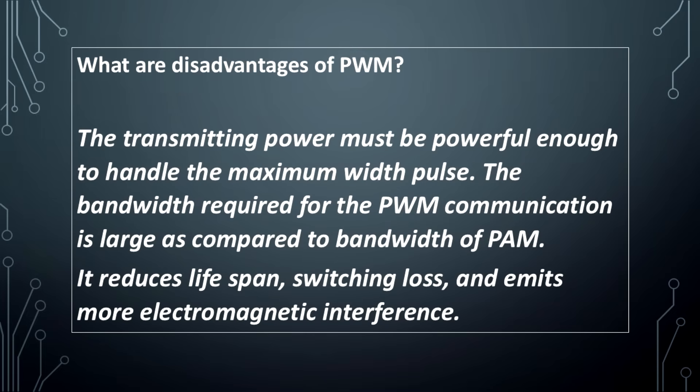What are the disadvantages of PWM? The transmitting power must be powerful enough to handle the maximum width of the pulse. The bandwidth required for PWM communication is large compared to the bandwidth of PAM. It also reduces lifespan, increases switching loss, and emits more electromagnetic interference.